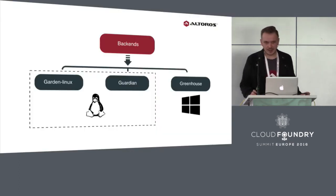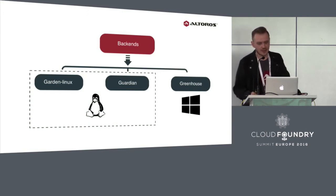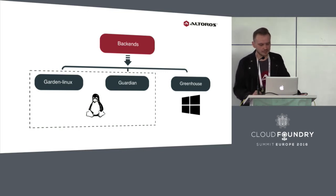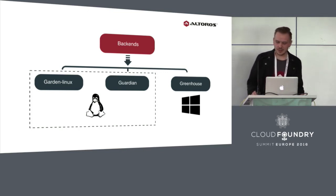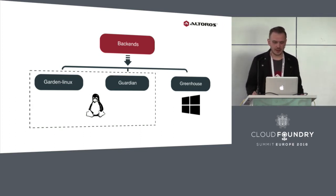What backends are available today? There is Garden Linux — the current default Linux container backend for Cloud Foundry. Greenhouse, which is a Windows container backend. And one more Linux backend called Guardian.